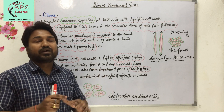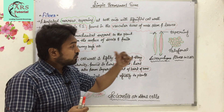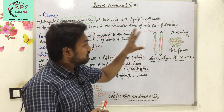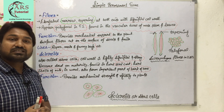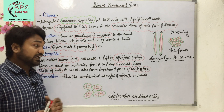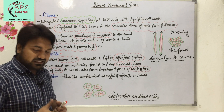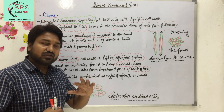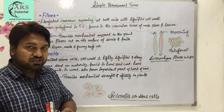That is all about fibers. In the diagram you can see that they have tapering ends and are polygonal in cross section. Now the next one is sclereids. Sclereids are also known as stone cells. Their cell wall is highly lignified and stony — they are hard in nature, that is why they are known as stone cells. We compare them with stone because their structure becomes stone-like after maturity.